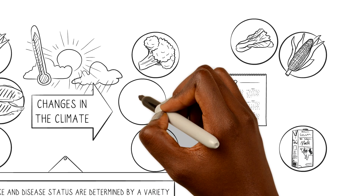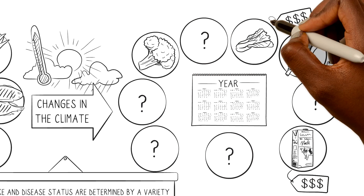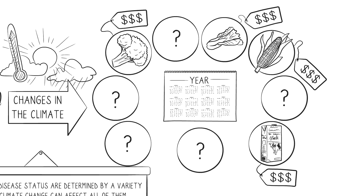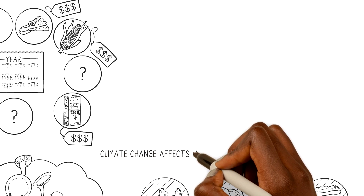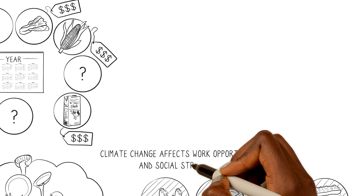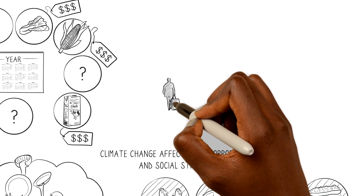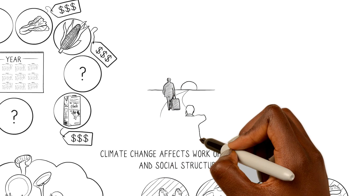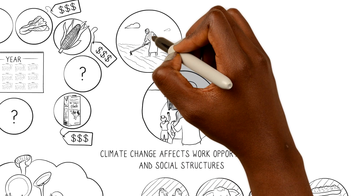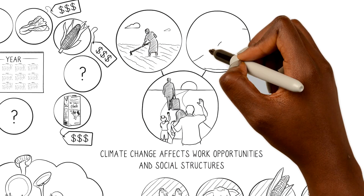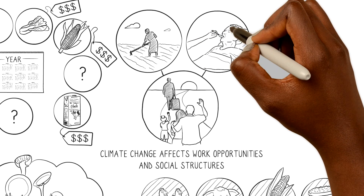Yields reduce, less food is available, and food prices might increase. Climate change also affects work opportunities and social structures. Family members leaving home to work elsewhere increases the burden on those who stay behind to work on the land and to care for and feed the young, old, or sick family members.